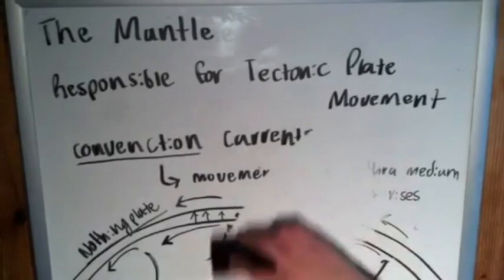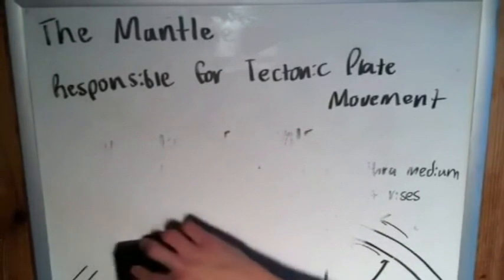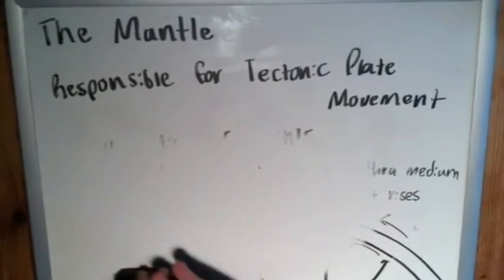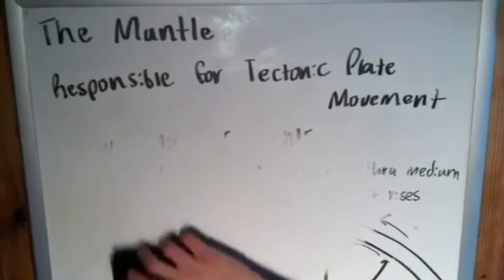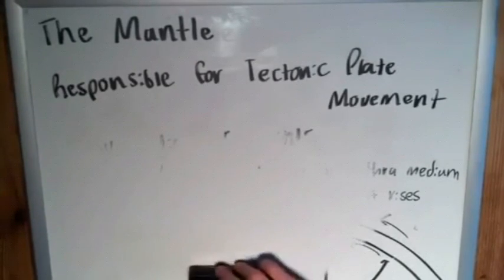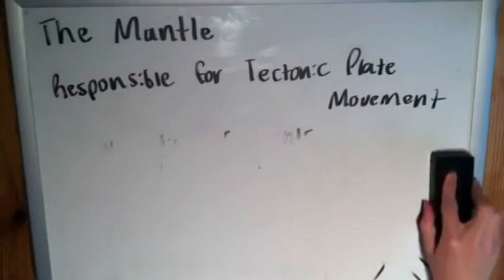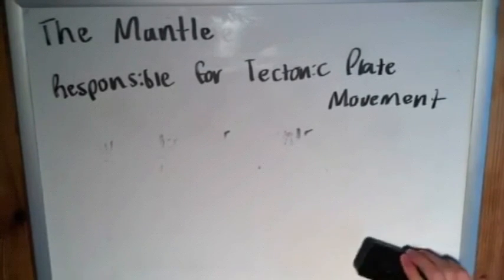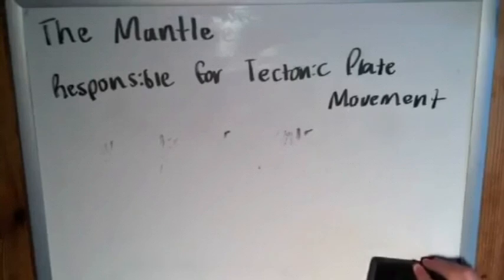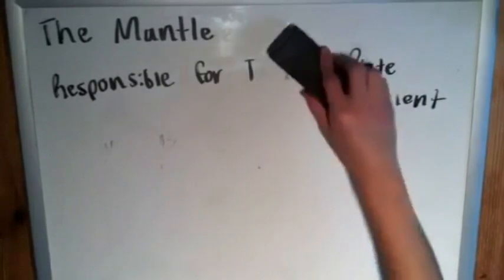So that was just a brief overview of some of the basic things about the mantle: thickness, temperature, composition, and the very important geological concept of the convection currents that exist within it. Hopefully this was informative, or otherwise good review. I'll see you all in the next video.